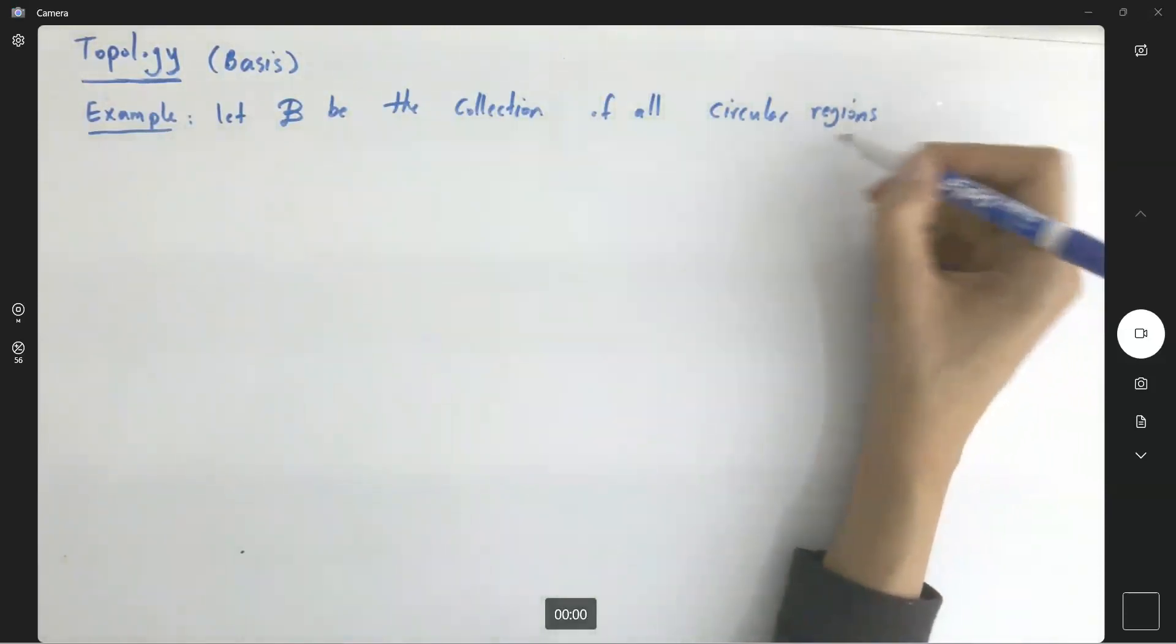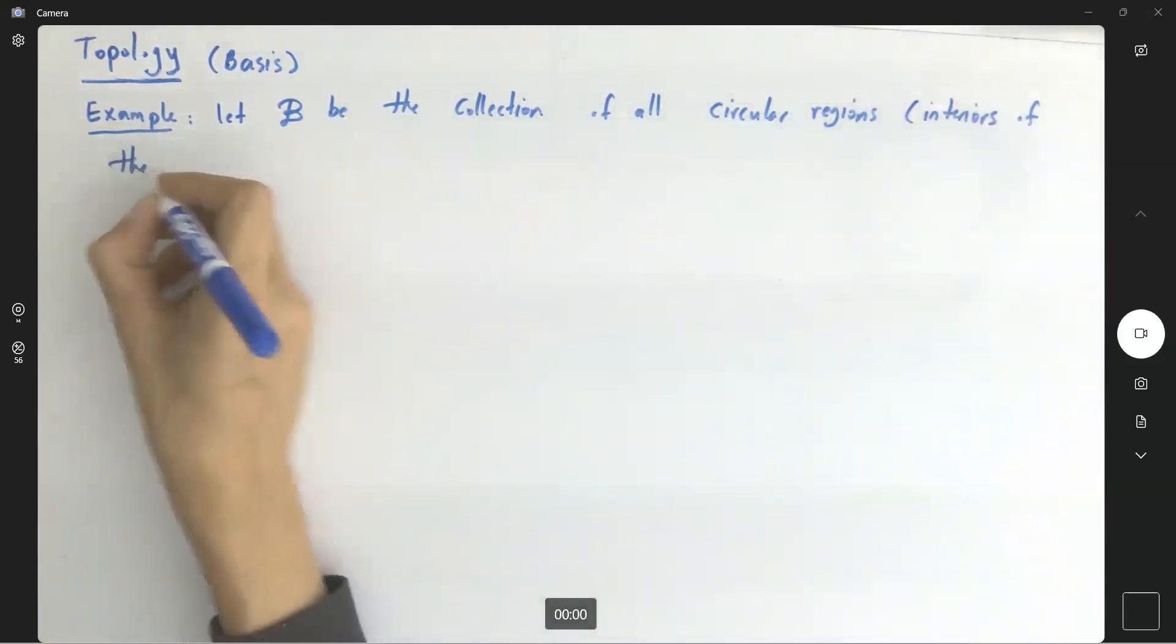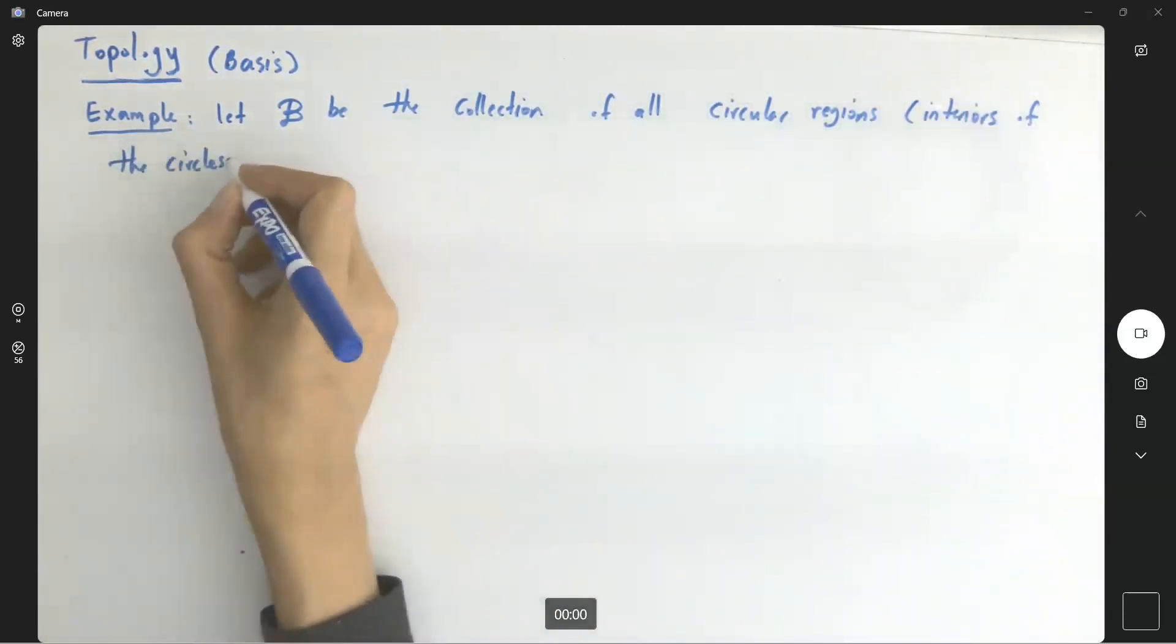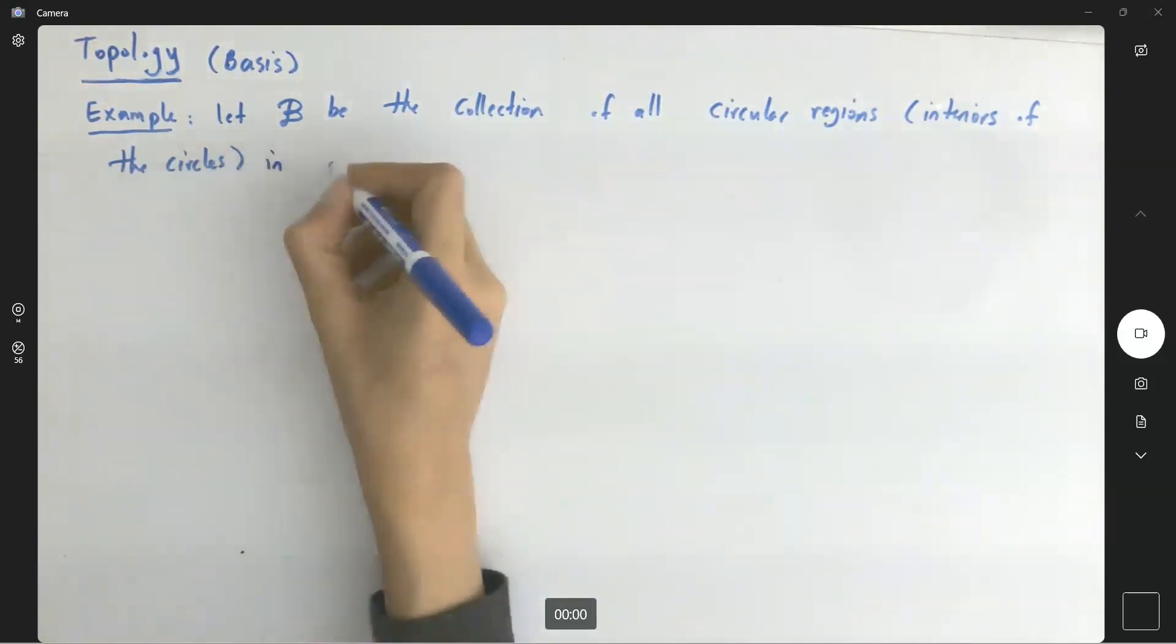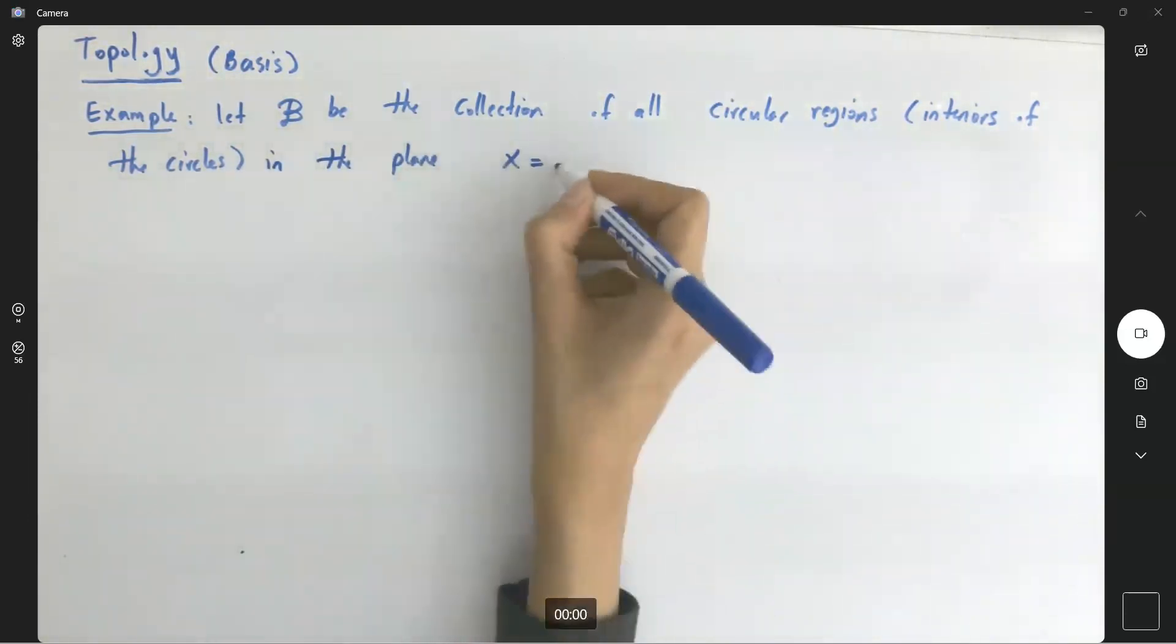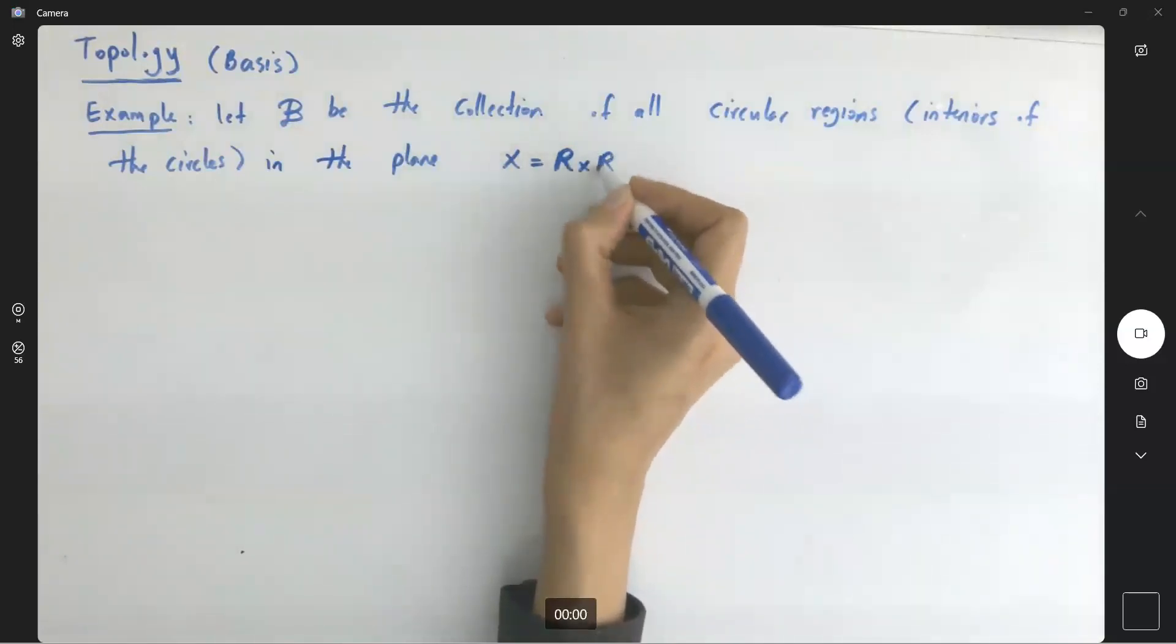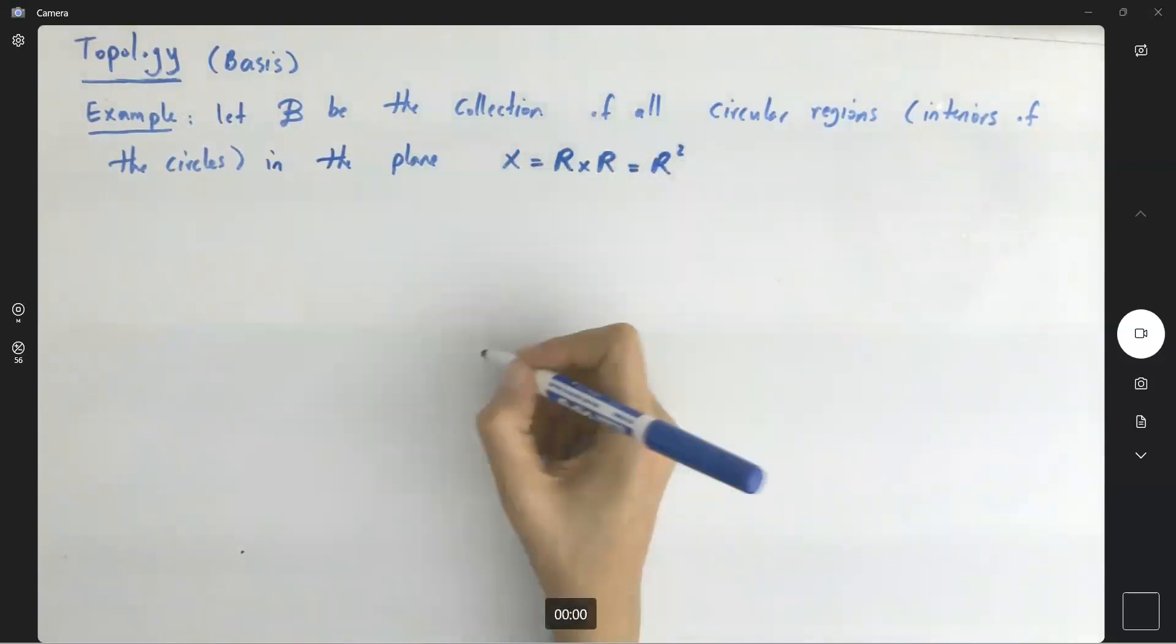We are just interested in the interiors of the circles in the plane. So our X is equal to R Cartesian product with R, or R plane.